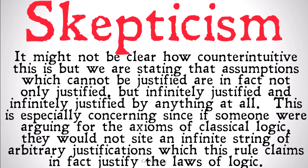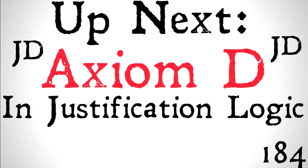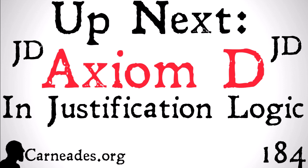The point is that this kind of justification, though we're going to need it to move on in justification logic, is going to be completely different from any actual kind of justification you'll see for propositions that can be justified, as opposed to propositions that in principle cannot be. If you want more information on this, check out Pyrrho and the Academics — I'll talk more about Agrippa's Trilemma and some of the problems for justification there. Up next, we're going to be looking at axiom D and system JD in justification logic. Watch a new video every single day for 100 days here at carnades.org, and stay skeptical, everybody.